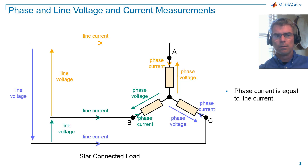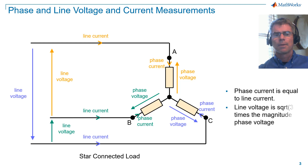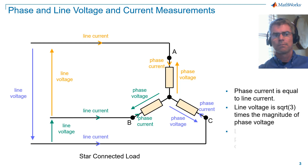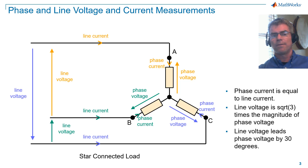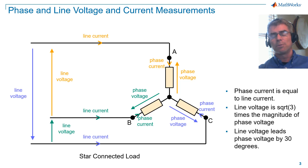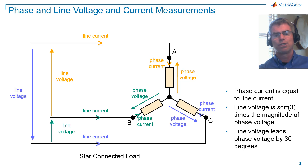For a star connected load, phase current is equal to line current. Line voltage is square root of three times the magnitude of phase voltage. Line voltage leads phase voltage by 30 degrees. We can't readily see the magnitude and phase relationships from this diagram, but we'll explore these relationships in more depth in just a moment.